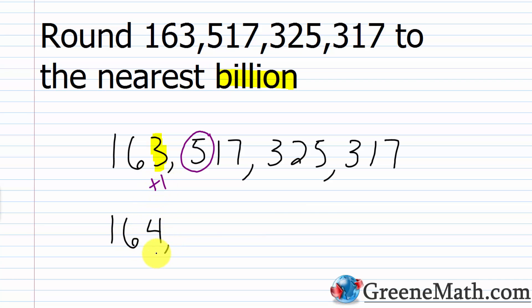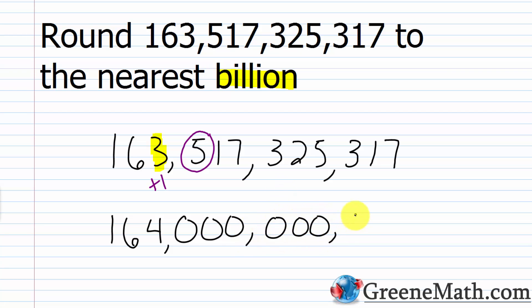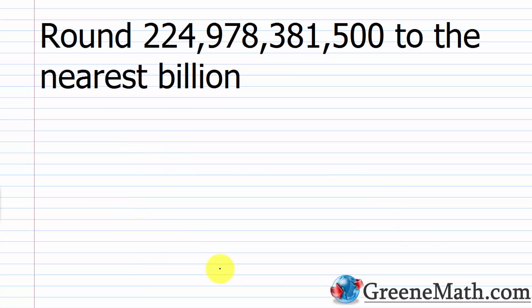As the final step, we replace each digit to the right of the roundoff place with a 0. So everything to the right of the 3 becomes 0. So 163,517,325,317 rounded to the nearest billion is 164 billion.